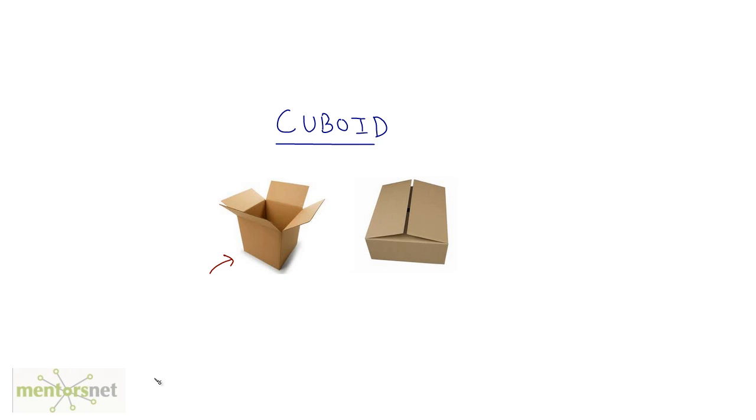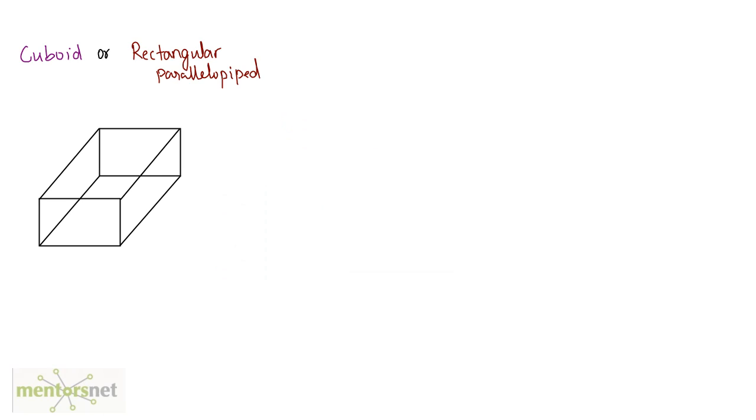So let's see what formulas we've got for cuboids. A cuboid is also known as a rectangular parallelepiped or a rectangular prism. So a cuboid has a length, it has a breadth and it has got a height, similar to a cube.